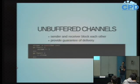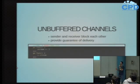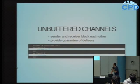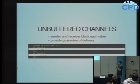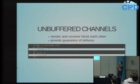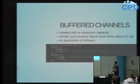O channel pode ser de dois tipos: com buffer ou sem. Quando chamo make sem o segundo parâmetro, ele tem capacidade zero - o emissor fica bloqueado até que alguém consuma a informação. Num exemplo com duas GoRoutines, se a de baixo tentar consumir com o channel vazio, ela fica bloqueada; a de cima também fica bloqueada até alguém consumir. Elas se desbloqueiam ao mesmo tempo. A vantagem é garantia de entrega: se a GoRoutine passou pela linha de envio, é porque alguém consumiu aquela informação - ela não foi perdida.